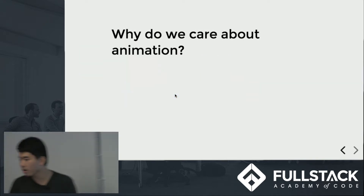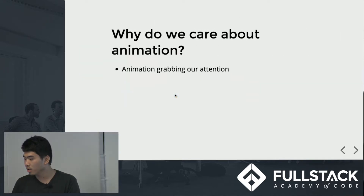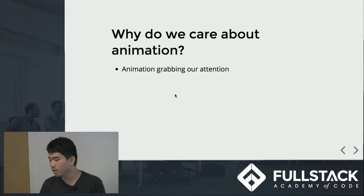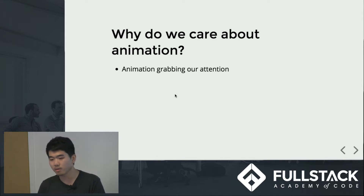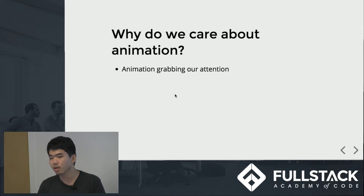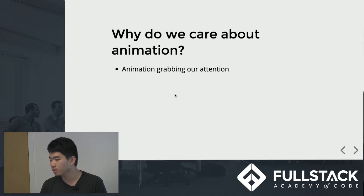Why do we care about animation? Animation grabs our attention. As we see something, our brain actually processes much slower than our eyes. We select our attention depending on value factors. One factor is if the thing is moving or not — that's what animation is.